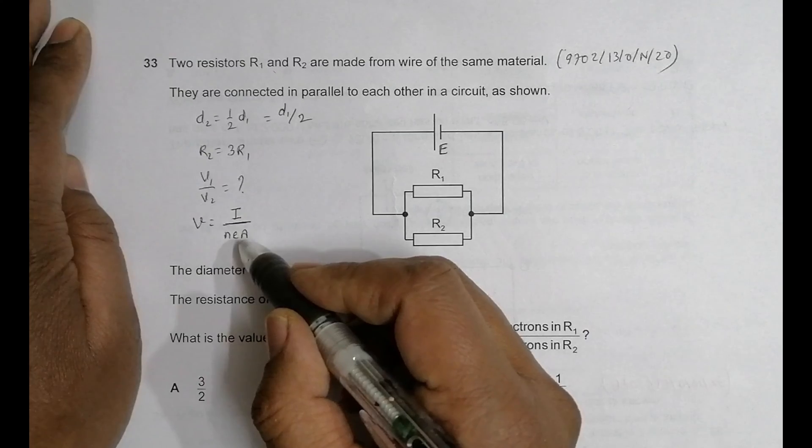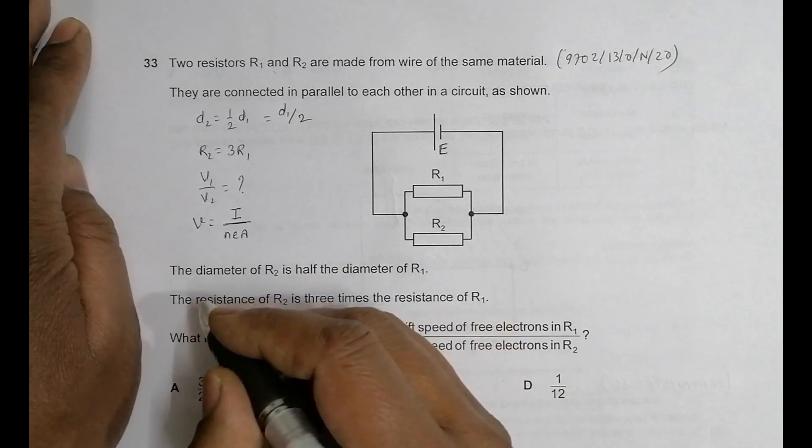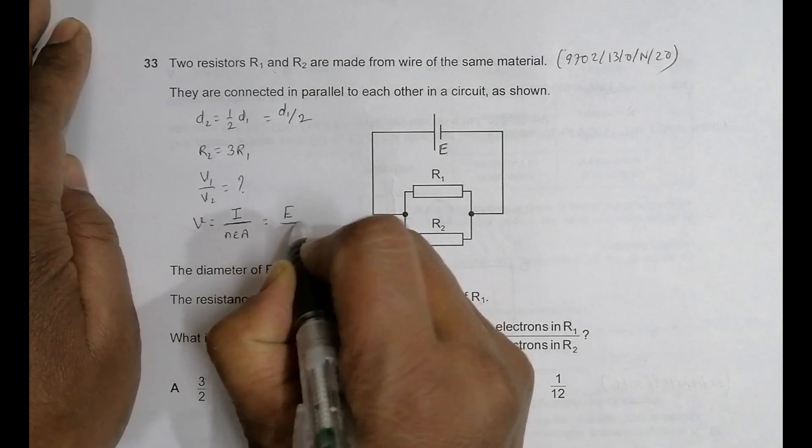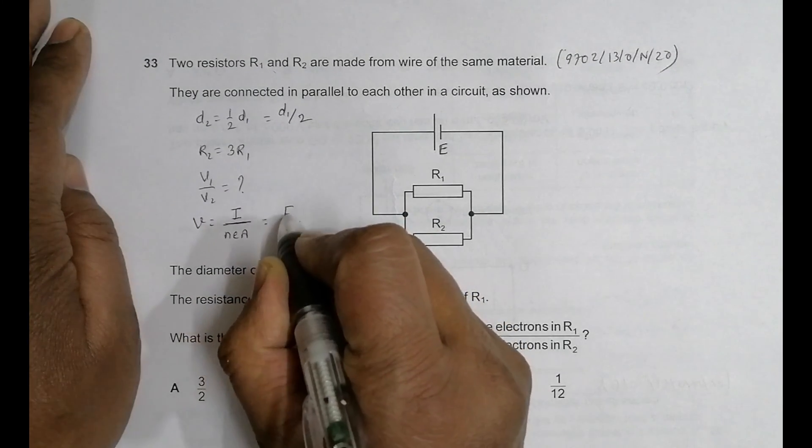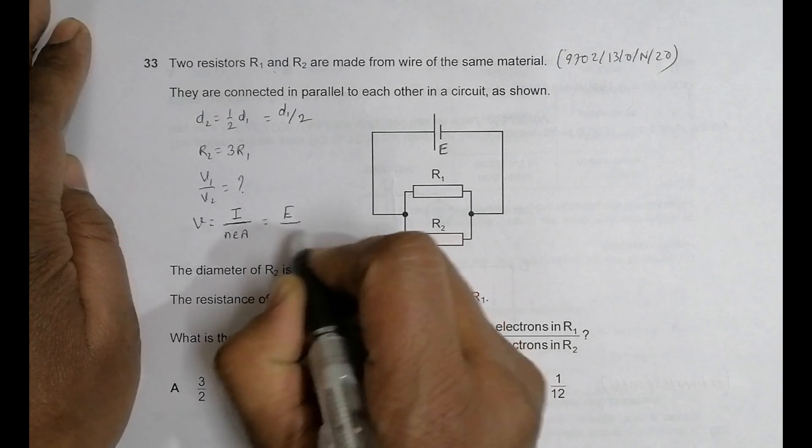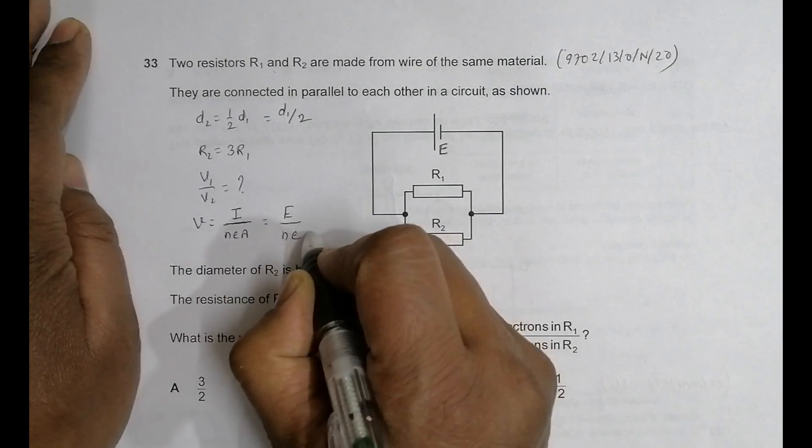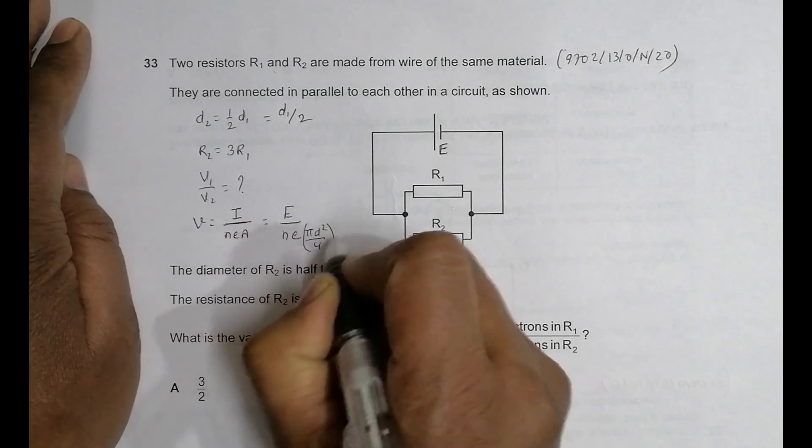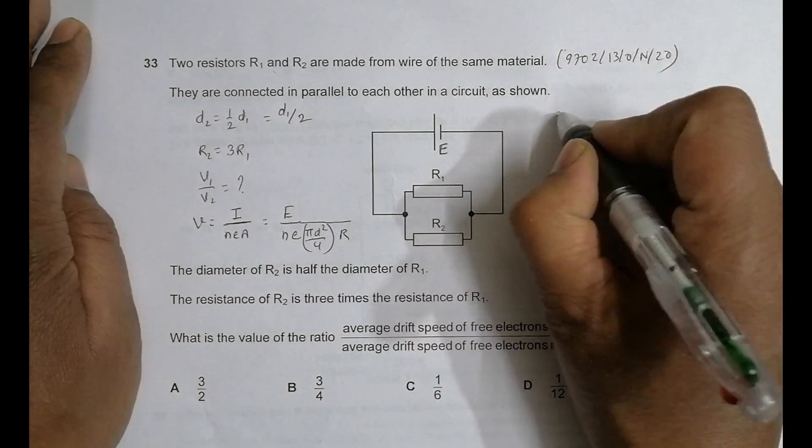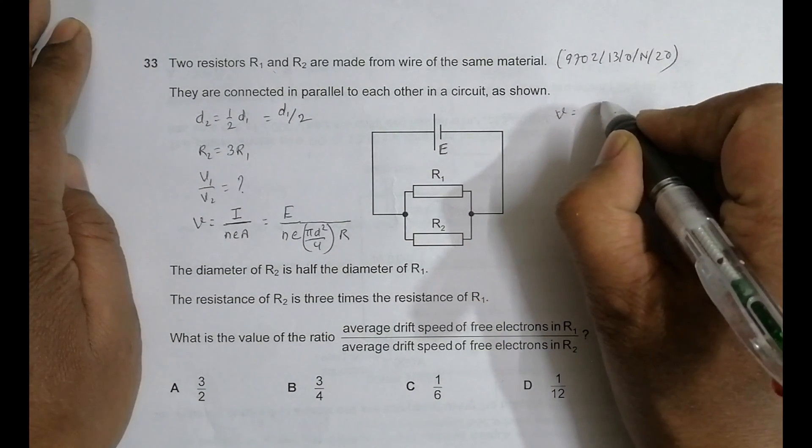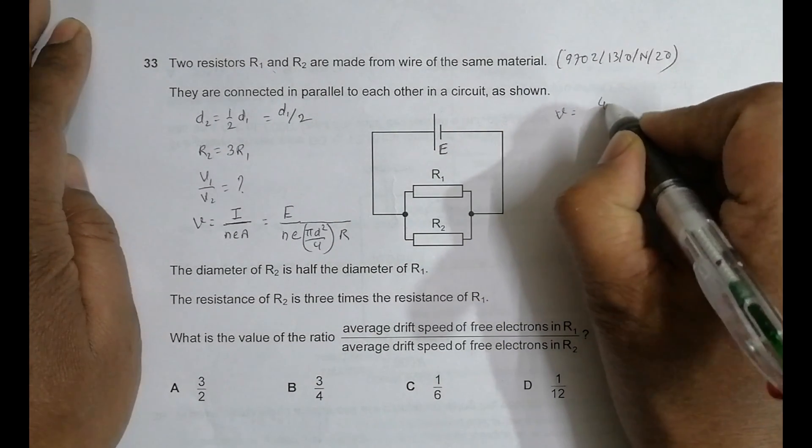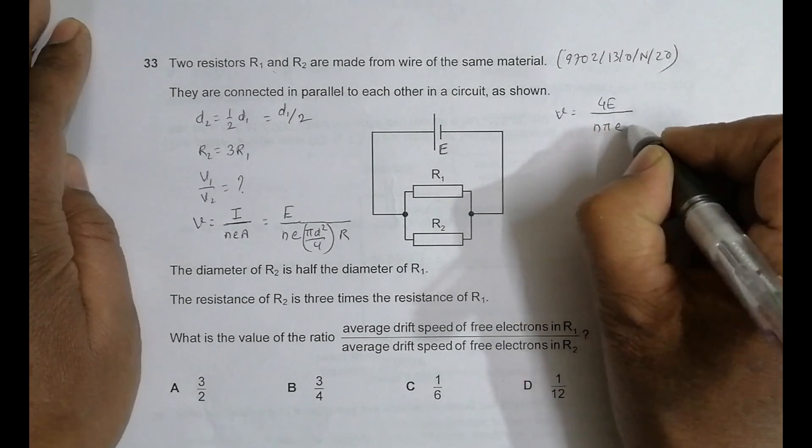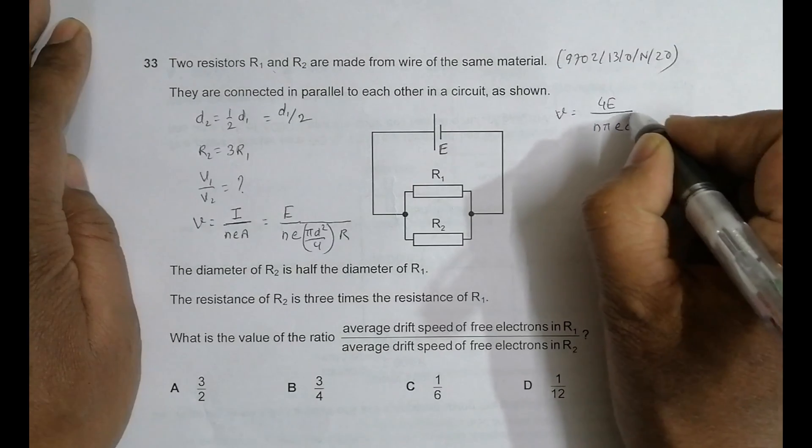The current is given by E by R, so it is E by R. So drift velocity equals I over NEA, which is E over R times 1 over NEA. A equals πD² by 4, so V equals 4E divided by NπED²R.